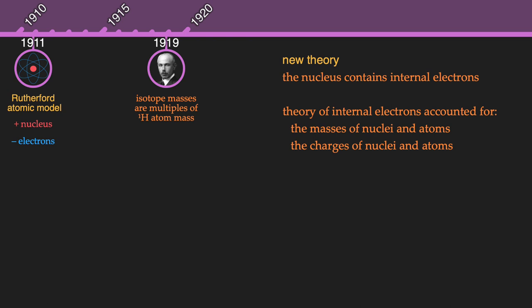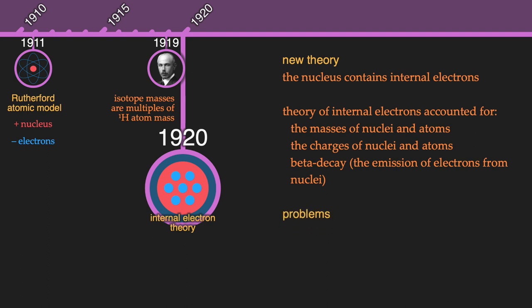The presence of internal electrons also explained beta radiation, a kind of radioactive decay where an electron is emitted from the nucleus of atoms. Since this model featuring internal electrons was so successful at explaining experimental evidence, it became the mainstream model of the atom by 1920. However, there were some issues with this model.